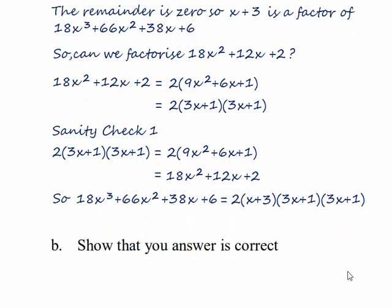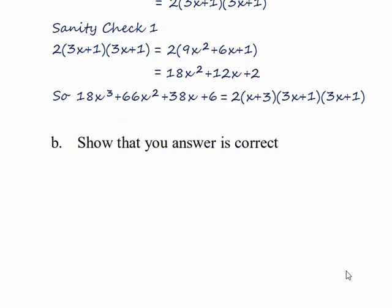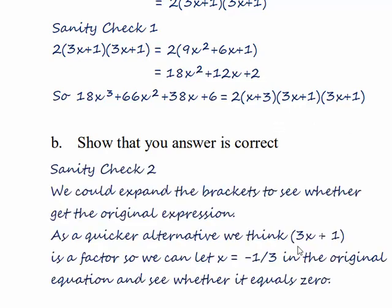Part b says show your answer is correct. Well, we can do that by multiplying all the factors together. We think that 3x plus 1 is a factor. So if we let x equal minus a third, which means that this factor goes to zero, and we put that into the original expression, if that comes out to be zero, then 3x plus 1 is a factor.